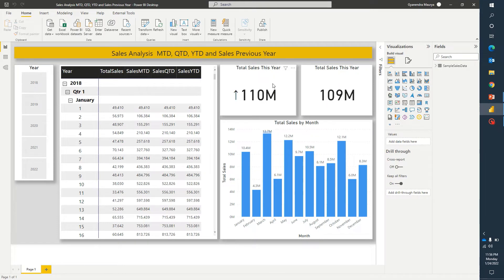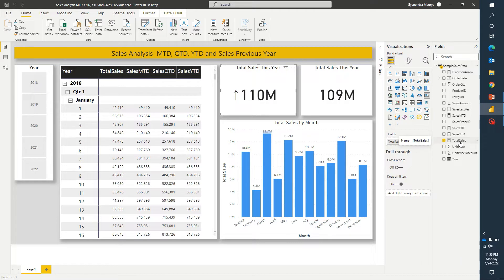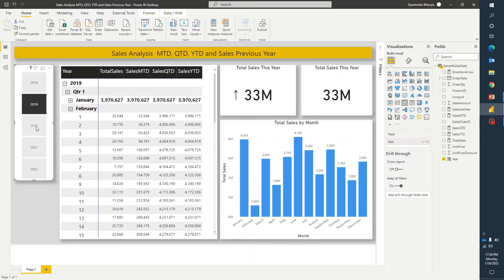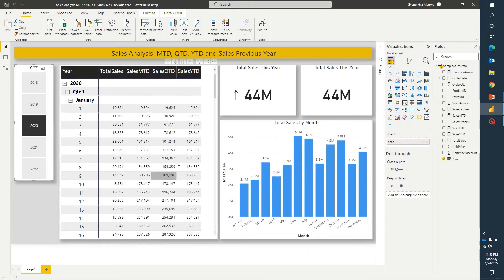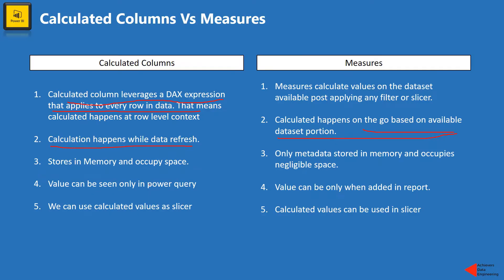For example, in this card, I'm using a measure. So whenever I will drag this measure on the canvas, then only its value will be calculated and evaluated based upon any selected slicers or based upon any available values or any hardcoded filters, I would say. So based on that, its value will be evaluated on the go.